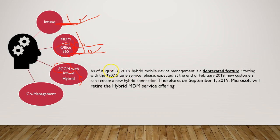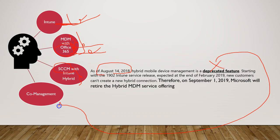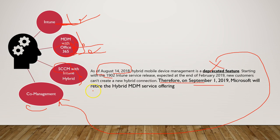From August 14th, 2018, they started deprecating this hybrid feature. The good news is they introduced a new feature called co-management for SCCM. This hybrid feature was deprecated and they set a target of version 1902 onwards. They are completely removing it from September 1st, 2019 — it is fully retired, meaning no clients will receive policies from the Intune cloud.